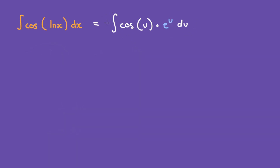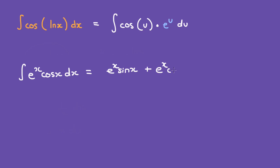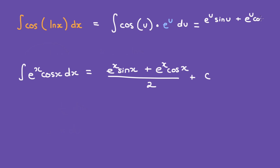Now we have already solved this integral in our previous video — I'll link it down in the description if you want to see it. We know that the integral of e to the power of x cosine of x dx equals e to the power of x sine of x plus e to the power of x cosine of x, all over 2, plus c. And here, instead of x we have u, so just change the x into u's: e to the power of u sine of u plus e to the power of u cosine of u, over 2, plus c.